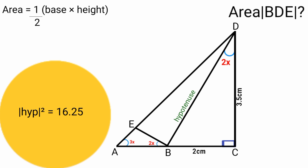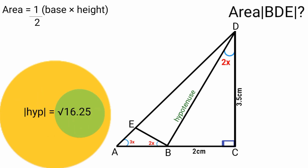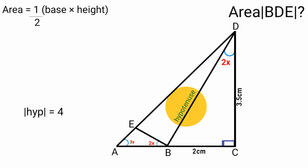To find the exact value of the hypotenuse, we take the square root of both sides. The square root of 16.25 is approximately 4.03, which is approximately equal to 4. So the length of this side is 4 centimeters.